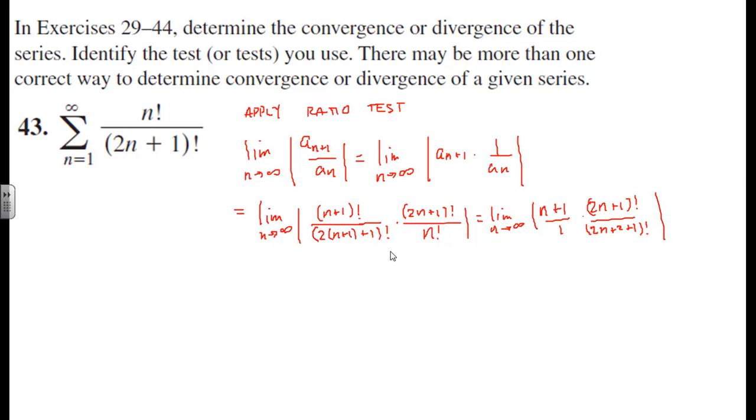Again, I got that by distributing this two through both of those terms. So the limit as n approaches infinity of the absolute value of n plus one over one multiplied by two n plus one factorial over two n plus three factorial.